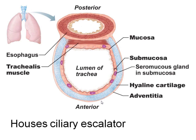The C-shaped cartilage faces forward with the esophagus at the back; a muscle holds the cartilage together, allowing the esophagus to bulge in but never fully close the trachea. The tracheal lining has mucus-secreting epithelial cells with cilia — this is called the ciliary escalator. Mucus traps bacteria and particles, and the cilia beat to move this material up to the mouth for removal. This is a very important protective feature against infection.